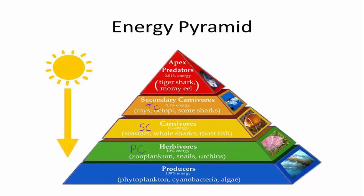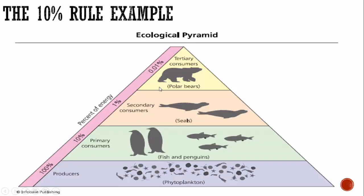We know 10% is transferred at each level. In this example, 10% of 100 is 10; 10% of 10 is 1; 10% of 1 is 0.1; and 10% of 0.1 is 0.01. Here we have an example where one number is wrong — they have 100 at the top. I start with 100, move the decimal one place to the left to get 10, then one place to the left again to get 1, then again to get 0.1 — not 0.01 as shown. So they made a mistake there.